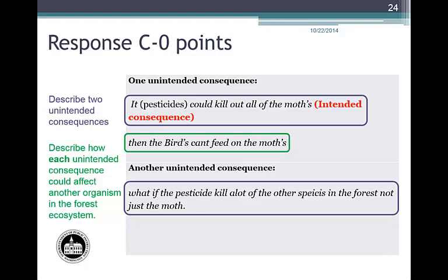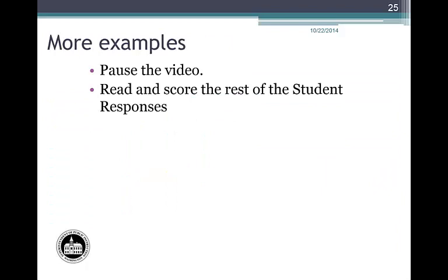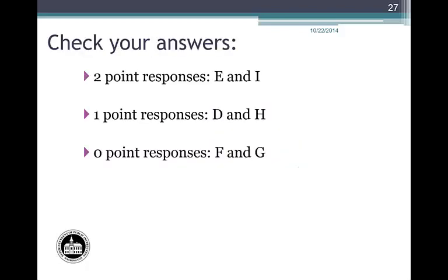Response C is an example of a student response that earns a total of zero points. At this time, pause the video, read through the rest of the student responses, and look for descriptions of two unintended consequences and how each could affect another organism in the forest ecosystem. Use the rubric and Responses A, B, and C as a guide to assign each sample student response a score. If you're working in a group, take some time to compare your decisions.